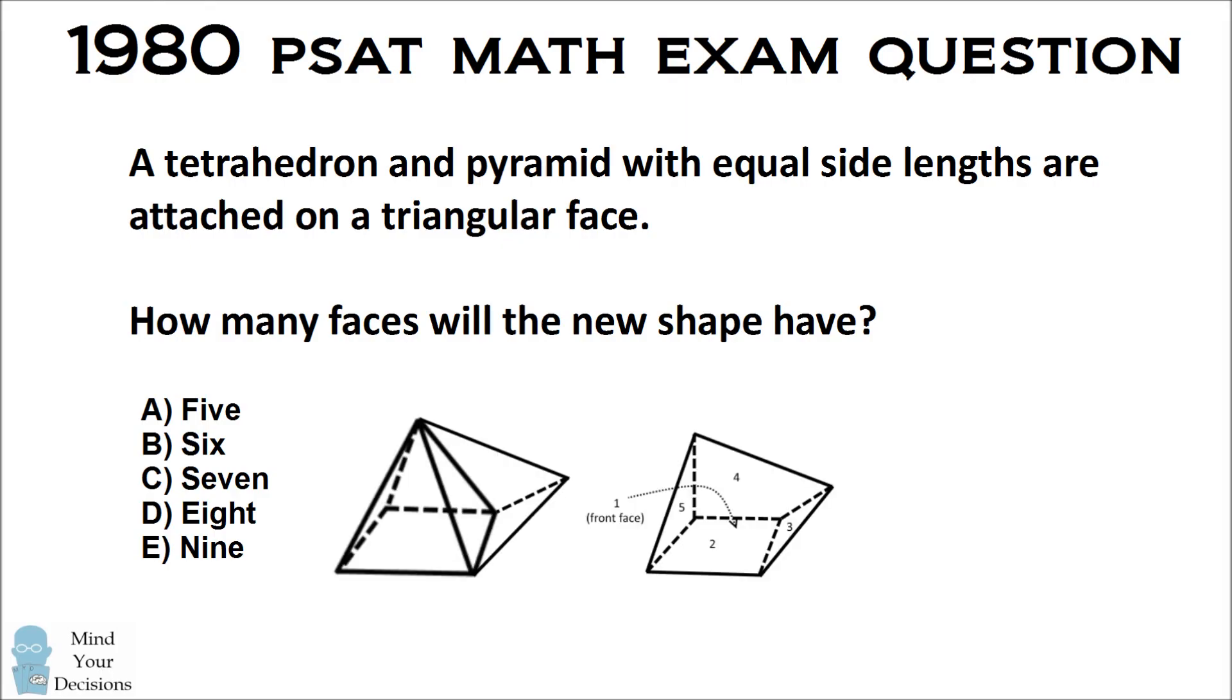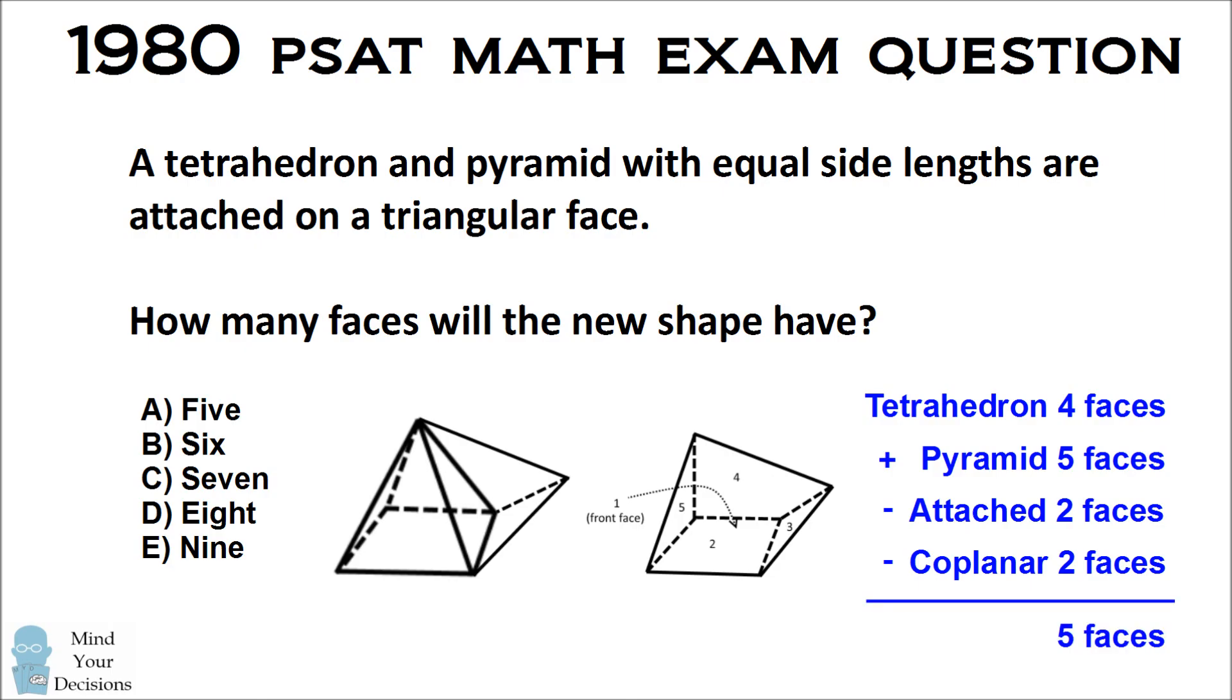So when you want to answer this question, it's quite a tricky question. You have a very unusual solid that results. The tetrahedron is 4. The pyramid is 5. When you attach two of the faces, you remove two faces. But then you also have two of these sides which become coplanar. So that reduces the number of faces by 2. So you only end up with 5 faces, and the correct answer is A. So the new shape actually is the same number of faces as the pyramid.